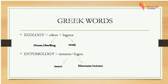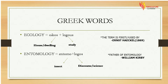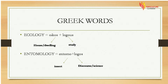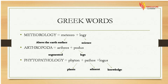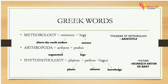Next word is ecology, carrying two Greek words oikos and logos. Oikos means house and logos means study. Next is entomology, made with entomo and logos, where entomo means insect and logos means study or science. Next word is meteorology — meteoro means above the earth surface and logi means science. Next one is arthropoda, made with two Greek terms arthros and pagis, where arthros means segmented and pagis means legs.